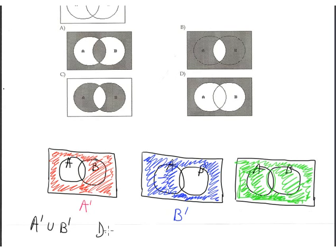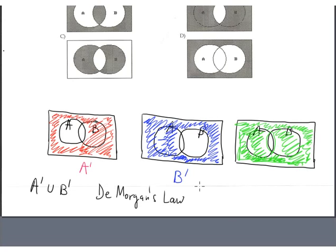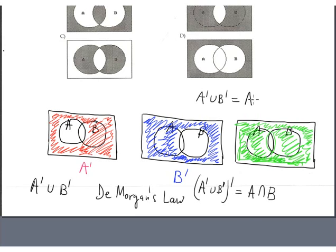Another way to see this is to apply De Morgan's Law: A complement union B complement is equal to the complement of A intersection B. A union B is this region, and its complement is everything outside it — that green part is the answer.